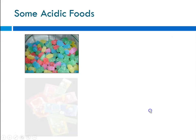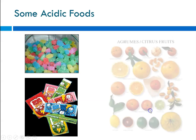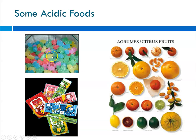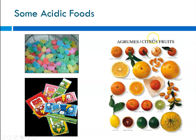Some examples of acidic foods: you've got your sour gummies, your sour bites, and all of the citrus fruits — blood oranges, lemons, limes, etc. All of those would be acidic. Other things that are acidic include tomatoes, for instance.